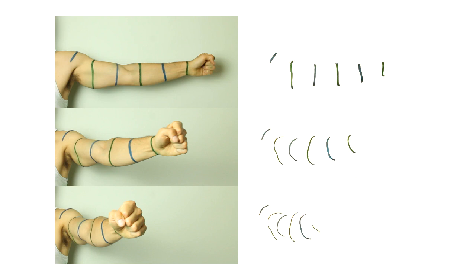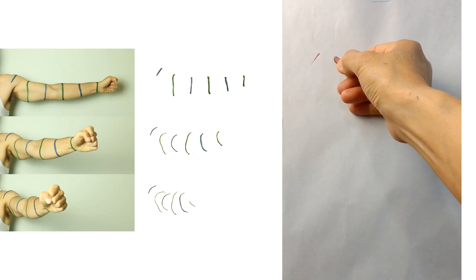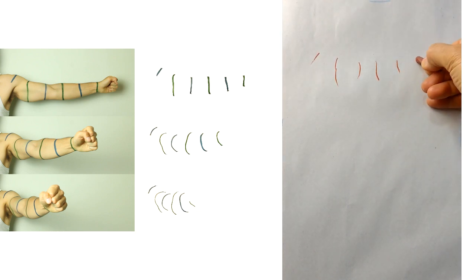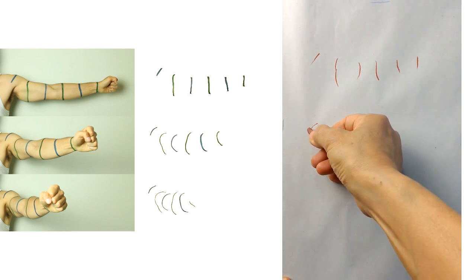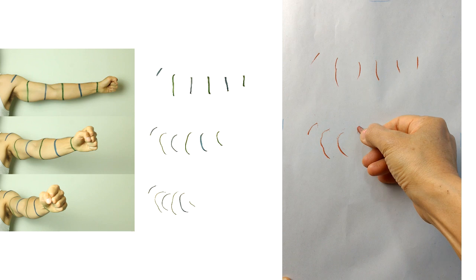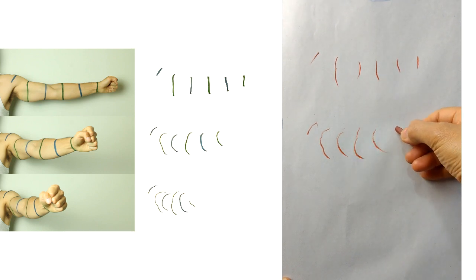They're lines evenly spaced apart and they're going to become closer and closer together the more foreshortened things are as the arm moves. And we can try and draw this sequence of lines. Just forget that they're based on an arm, forget the arm altogether. Just look at this funny cluster of lines and we're going to try and draw those first.